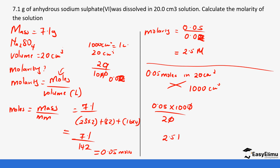I hope you have been able to understand the two methods — using the formula and also the first principle. The first principle method is going to be very beneficial when it comes to titration. I hope you have been able to understand. See you in the next lesson.